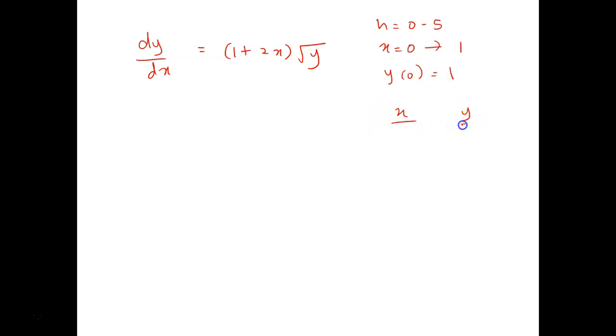So this is your x, this is your y, 0 and 1 and then step size is 0.5. So next is 0.5 and x from 0 to 1, so 1.0. So what are the values here?